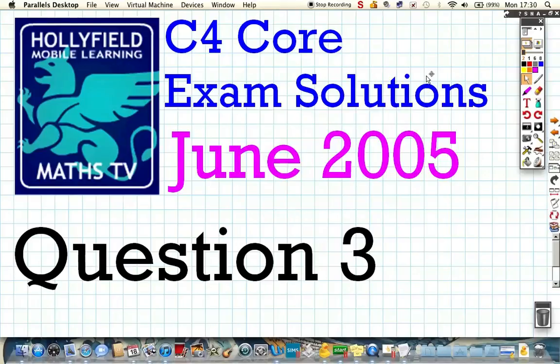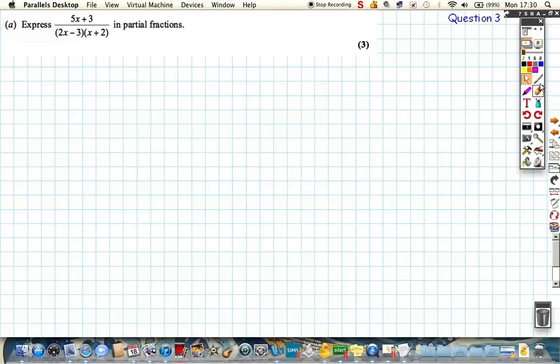So question 3 from June 2005 says express this expression in partial fractions. So standard partial fractions question, we know that 5x plus 3 all over 2x minus 3, x plus 2 can be written in the form.